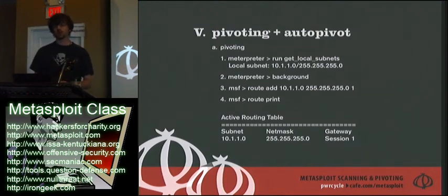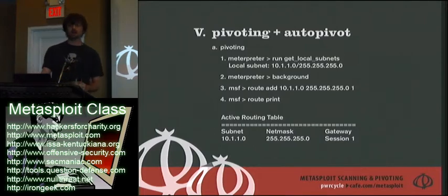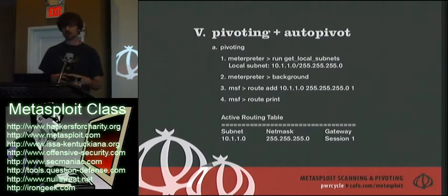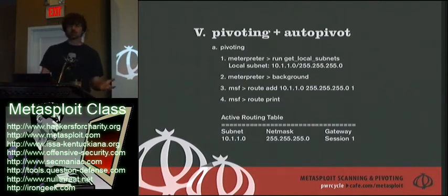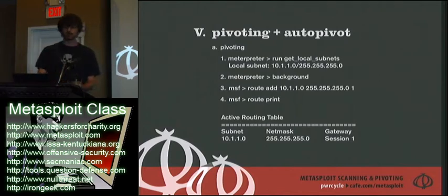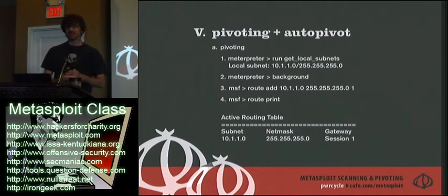When you exploit a particular box, there's a chance that box is going to be able to talk to other boxes that you can't connect to. If you're coming in from outside a firewall and you get a reverse shell from one particular IP address, one way to exploit someone might be a USB key — you give somebody a USB key, they plug it in, take their laptop back into the company, open it up, and that exploit connects back to you. Unless it connected back to you, there would be no way to get inside the firewall.